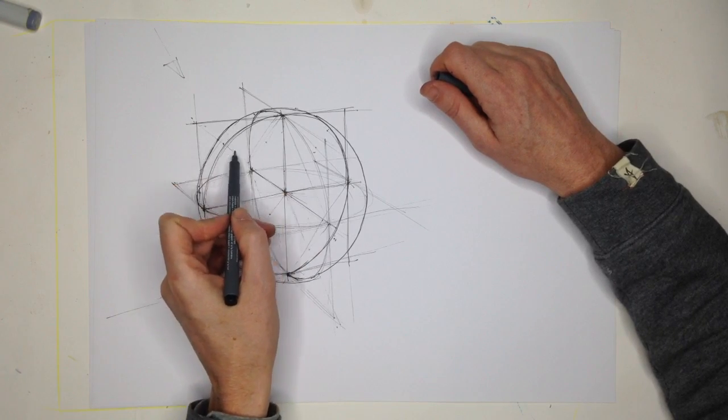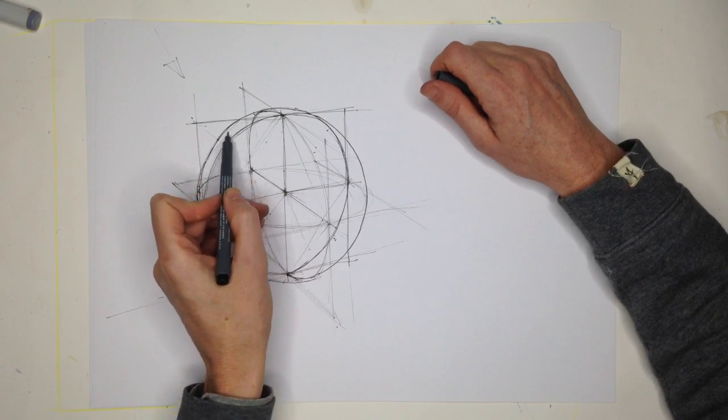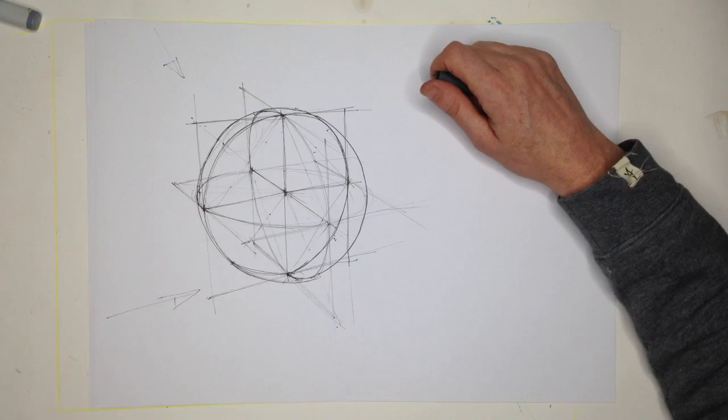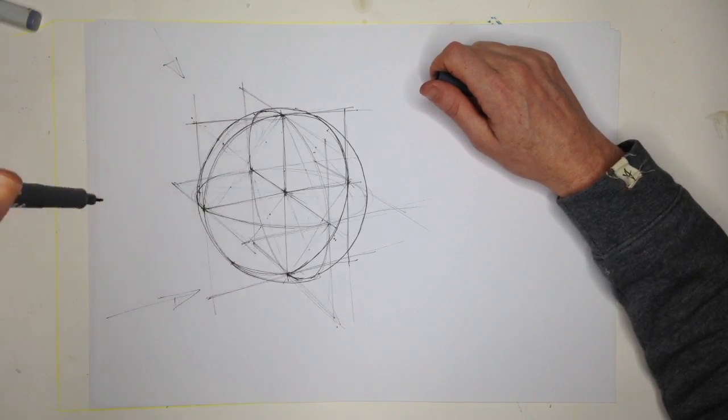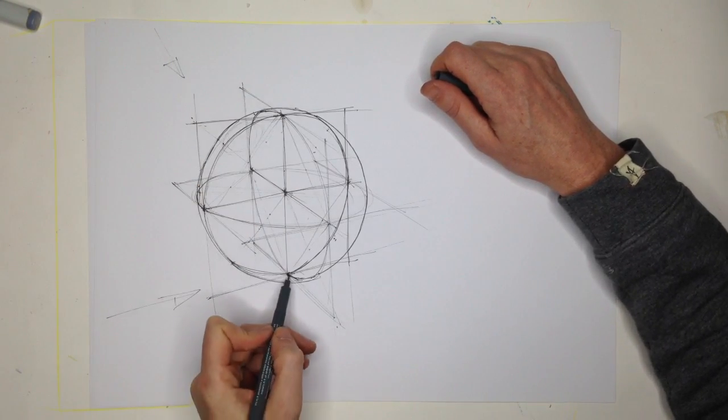Which would obviously give us a highlight, a center light right about there in the middle, and the shadow is going back a little bit and it's going to hit the ground surface.